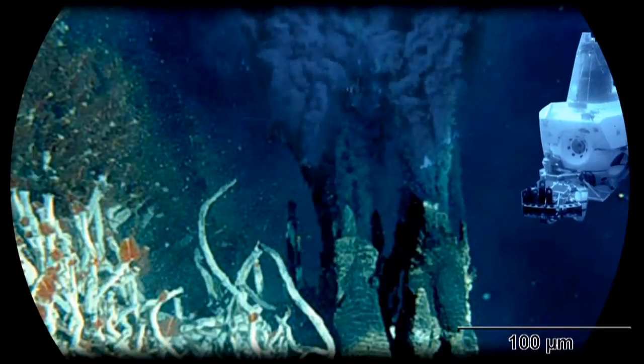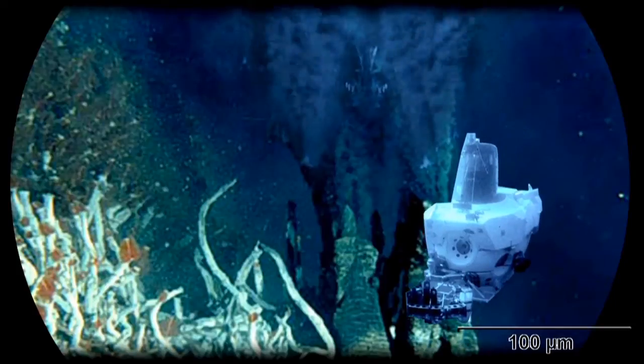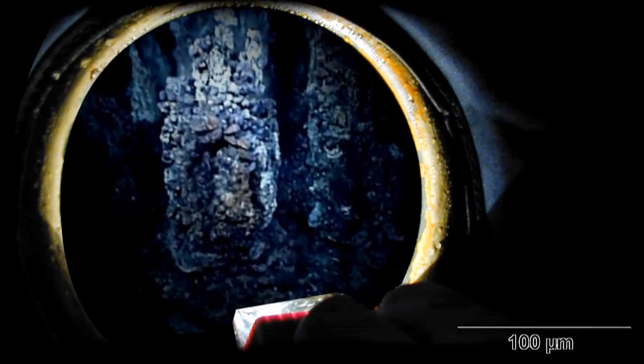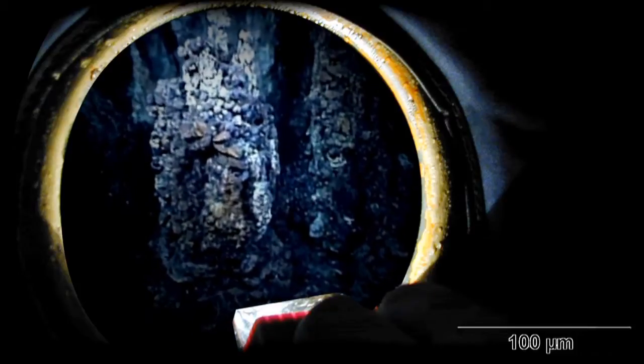One of the things that we study here are hydrothermal vents and methane seeps, which are these extreme environments at the bottom of the ocean. And to do this, we often use submersibles like Alvin or the Johnson Sea Link. And we get to go down to the bottom of the ocean and see these areas that very few people have ever seen and studied.